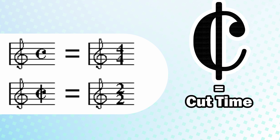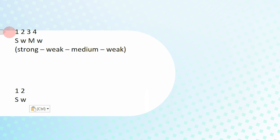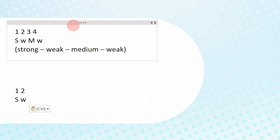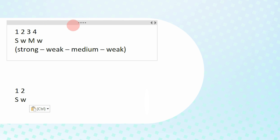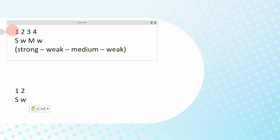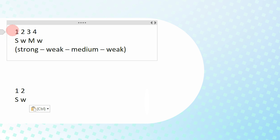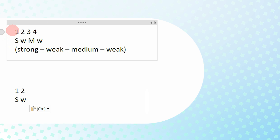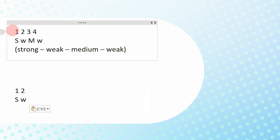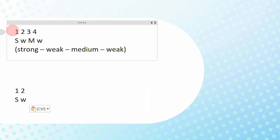Aside from that, the one big difference between the two is the pulse. In 4-4 time we count to 4 because we have 4 quarter note beats. The first beat is the strongest, beat number 2 is weak, then we have a medium beat, then a weak beat. So it sounds like: strong, weak, medium, weak — strong, weak, medium, weak.